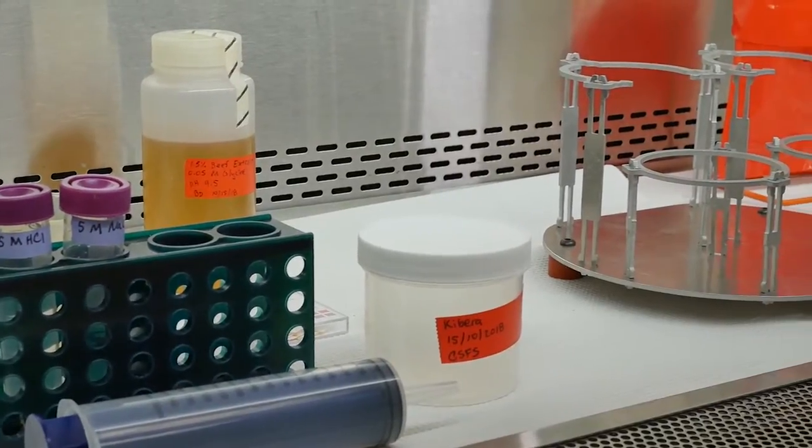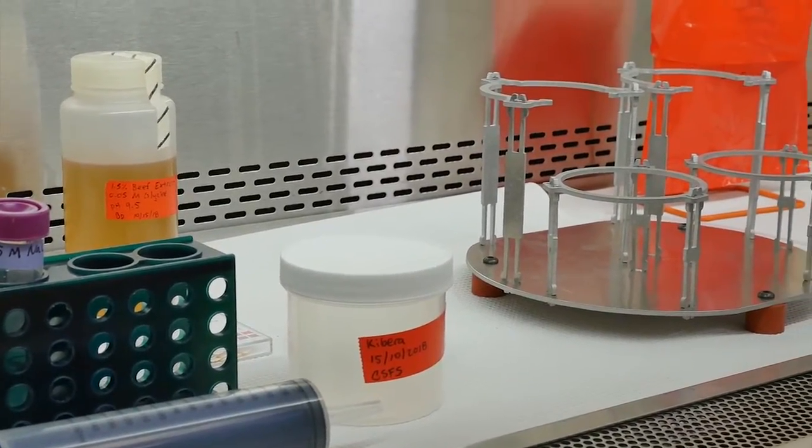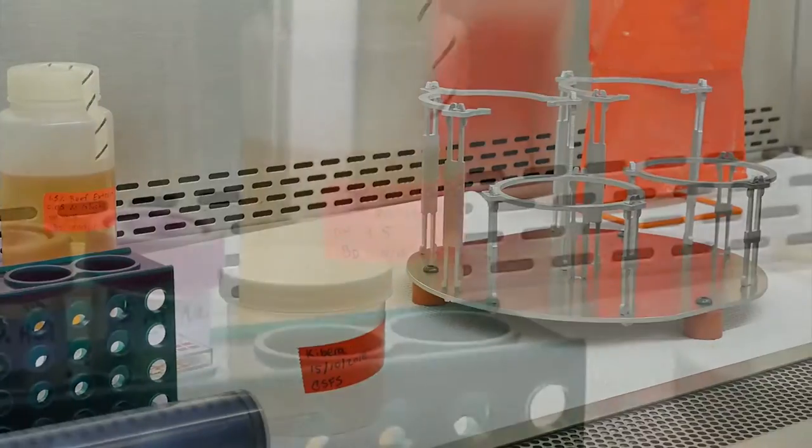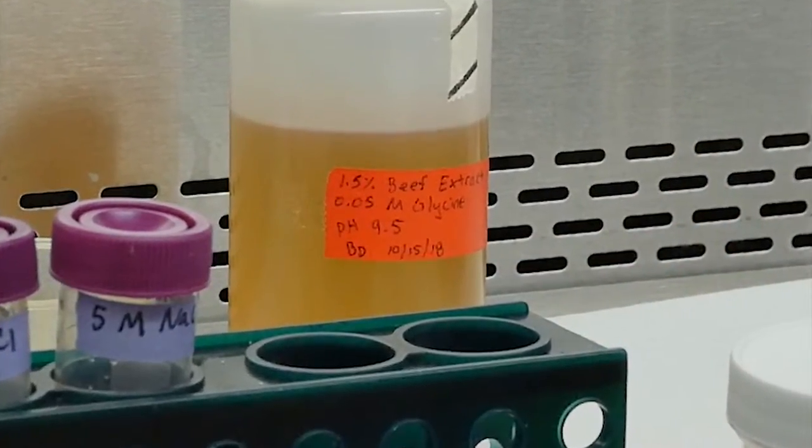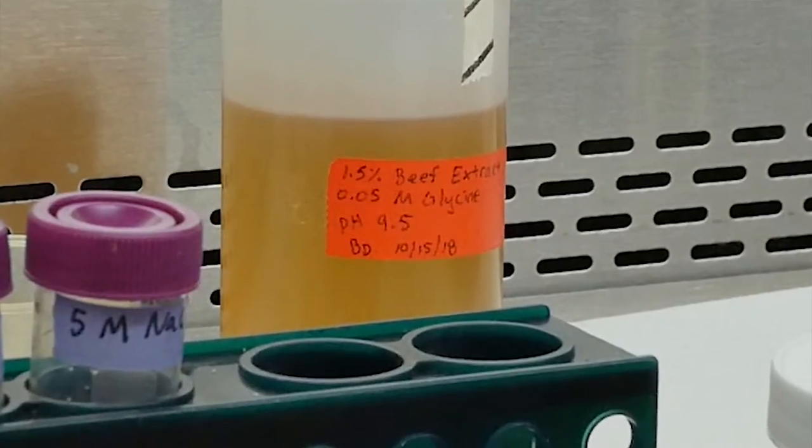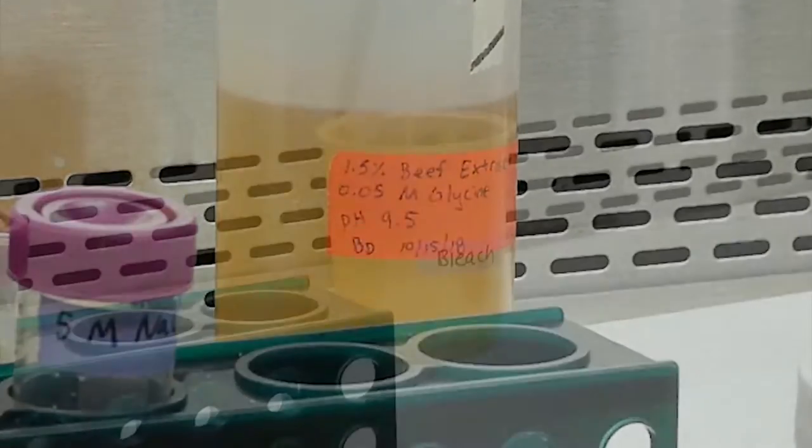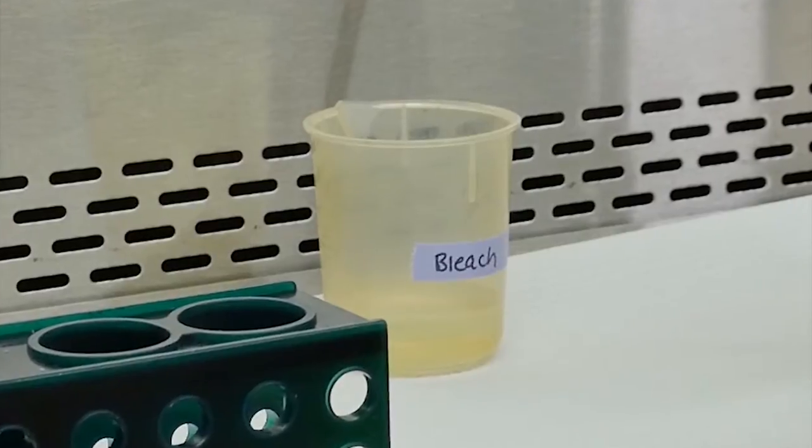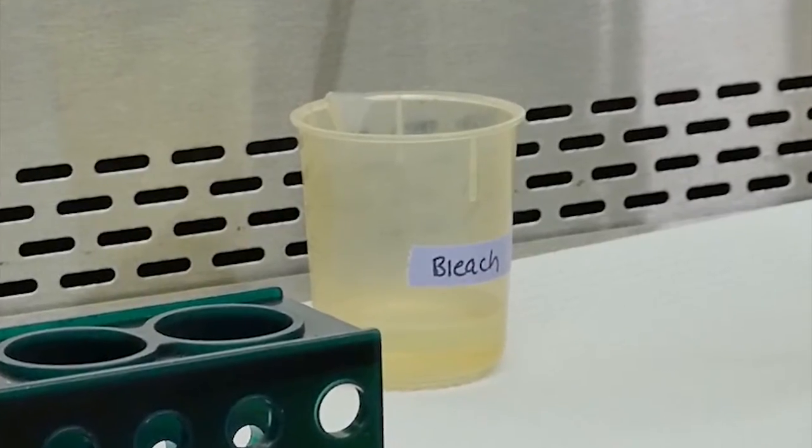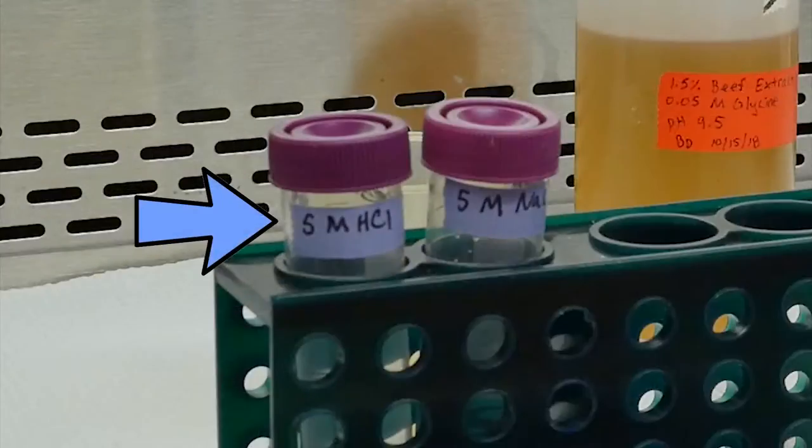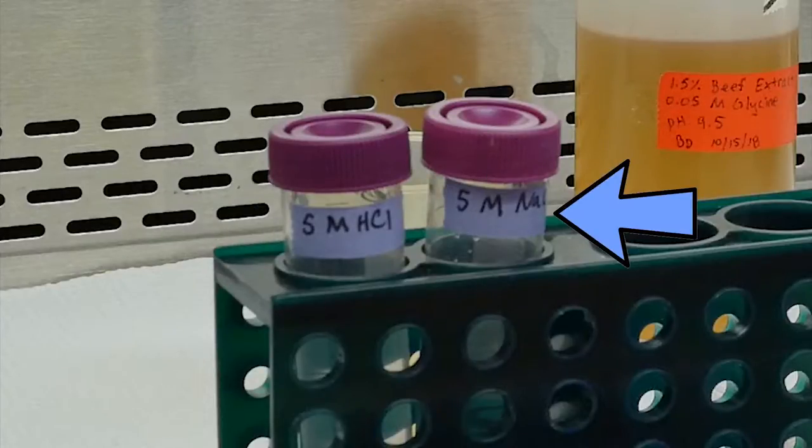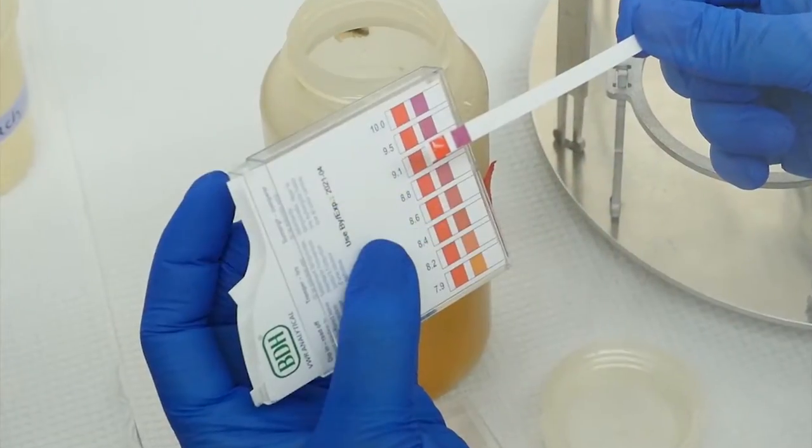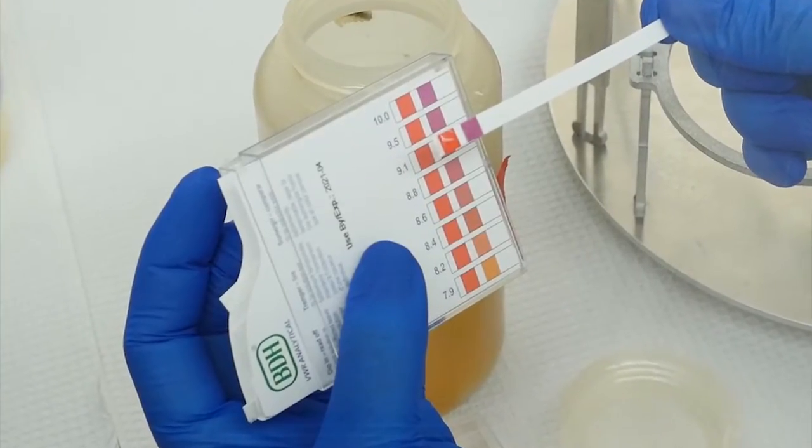You may then place the reagents and materials inside the biosafety cabinet including 300 milliliters of sterile 1.5% beef extract with 0.05 molar glycine at a pH of 9.5, 50 milliliters of concentrated 5% bleach solution in a small beaker, 5 molar hydrochloric acid, 5 molar sodium hydroxide, and pH strips with a range of 6.0 to 10.0.